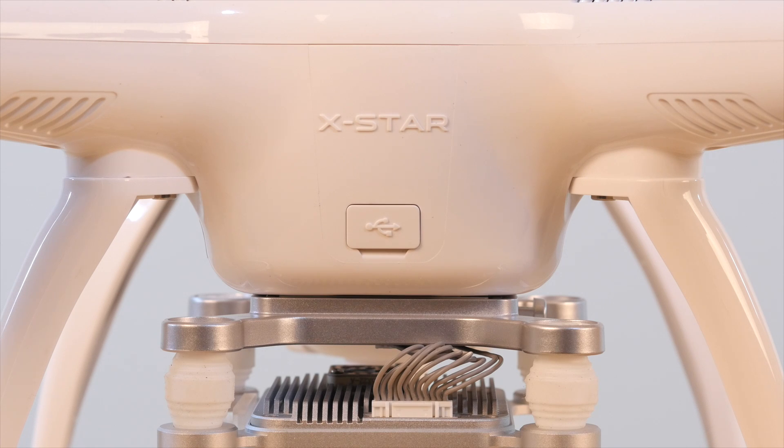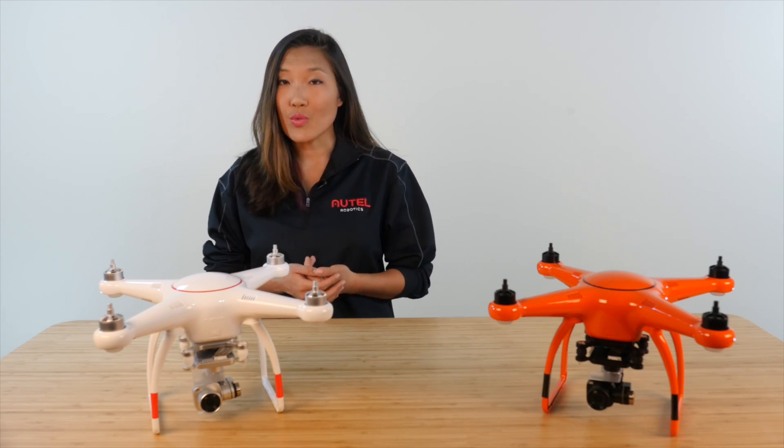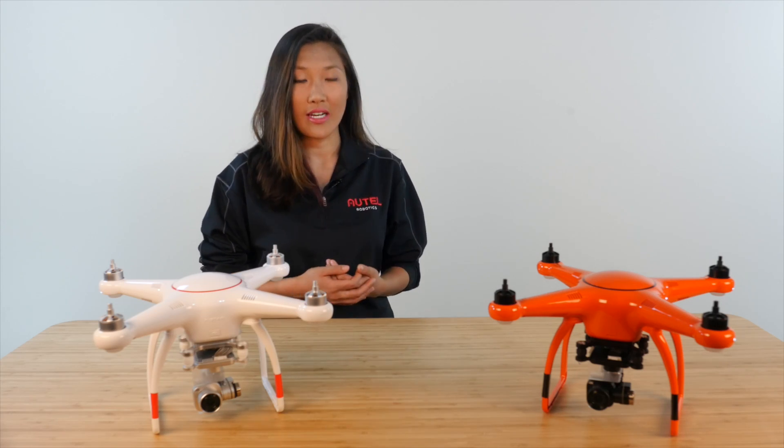Moving down to the body, you'll see a micro USB port on the front of the X-Star drone. This is mostly for service and repair, so you probably won't be using it very often, if at all. Tucked away to the right is the RC binding button.